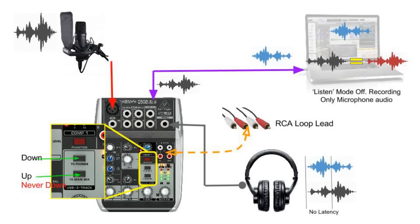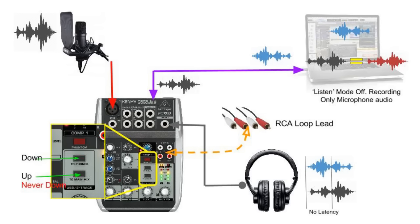And as track one is being played back on the laptop or PC, it is sent back to the mixer via the USB, combined and sent to the headphones. So we can hear both track one playback and our direct microphone audio on our headphones, while we are recording just the microphone as track two in our DAW.